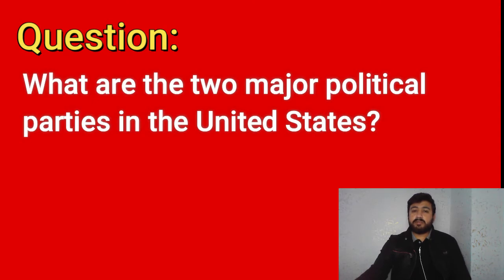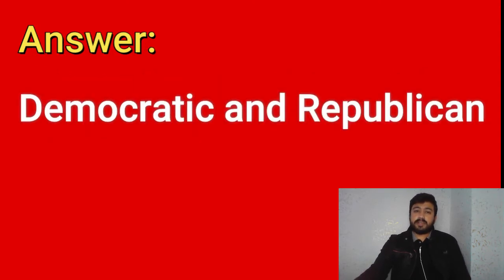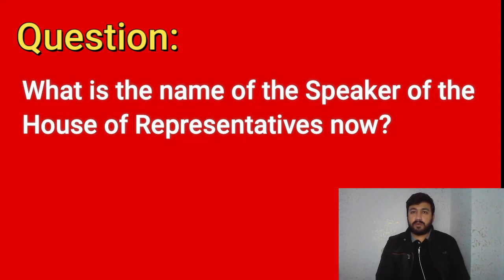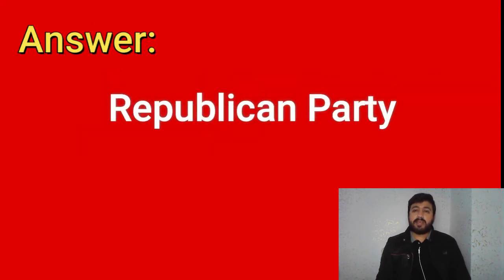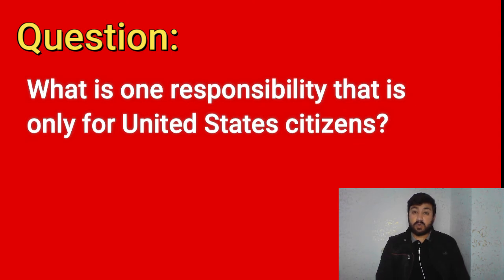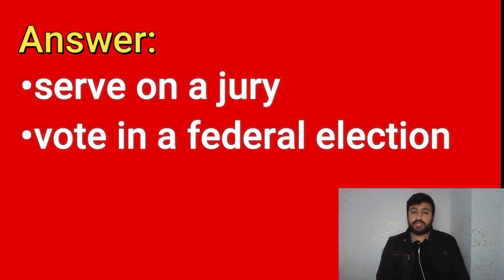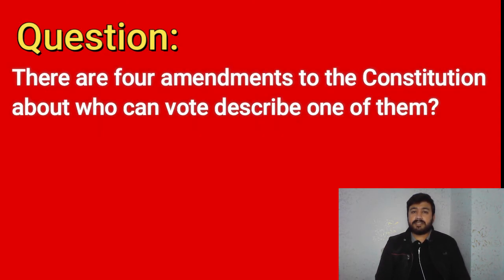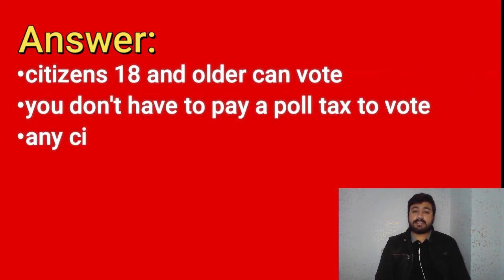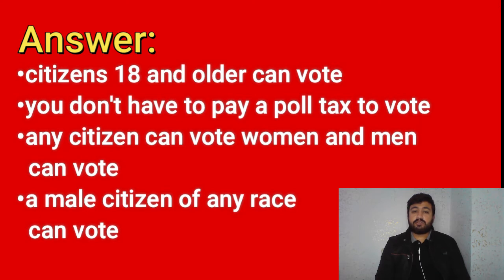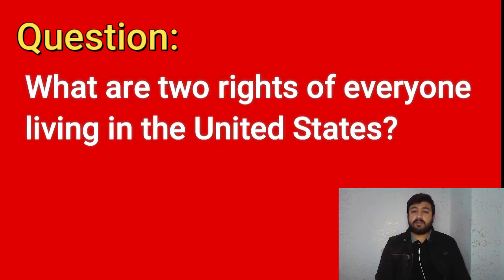What are the two major political parties in the United States? Democratic and Republican. What is the name of the Speaker of the House of Representatives? Nancy Pelosi. What is the political party of the president? Republican Party. What is one responsibility that is only for United States citizens? Serve on a jury, vote in a federal election. There are four amendments to the Constitution about who can vote — describe one: Citizens 18 and older can vote, you don't have to pay a poll tax to vote, any citizen can vote, women and men can vote, a male citizen of any race can vote.